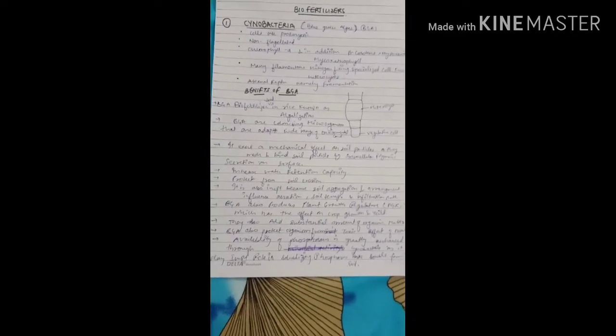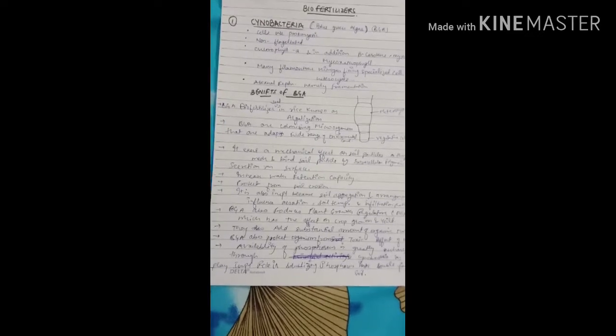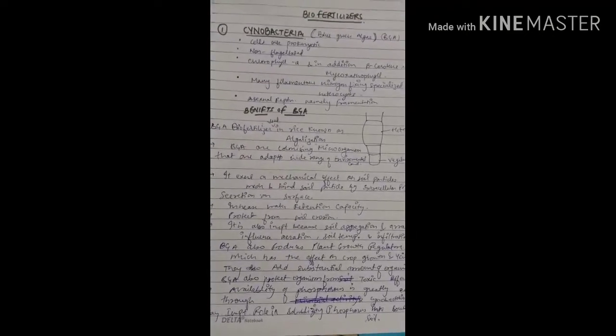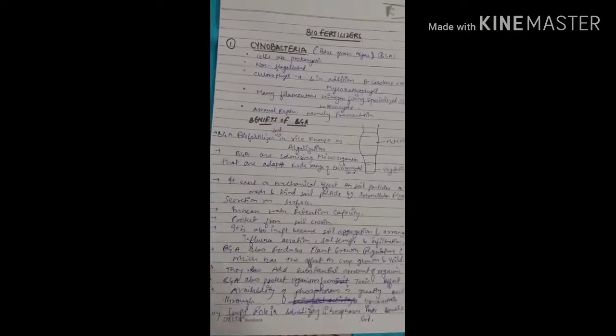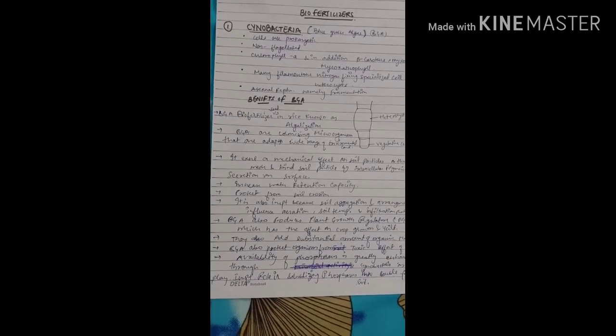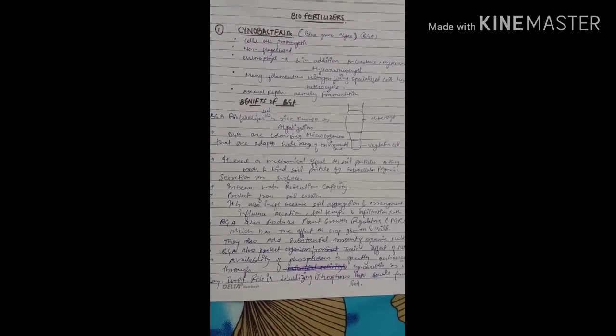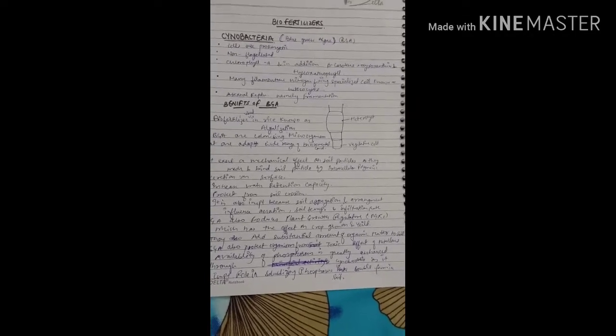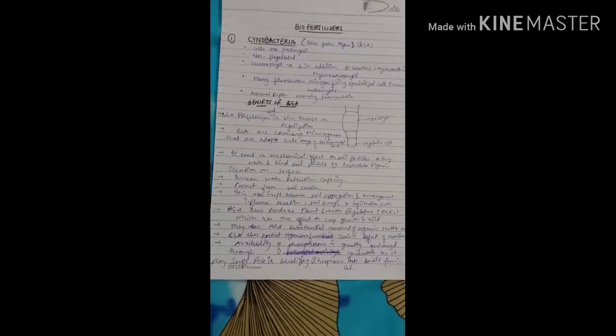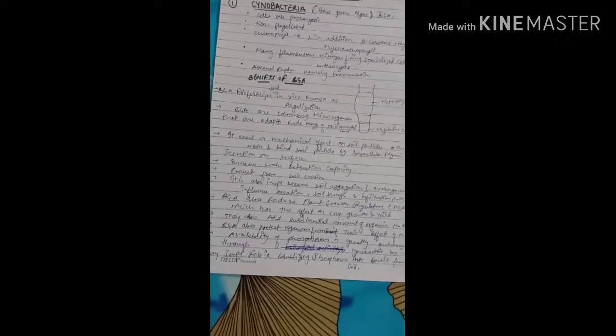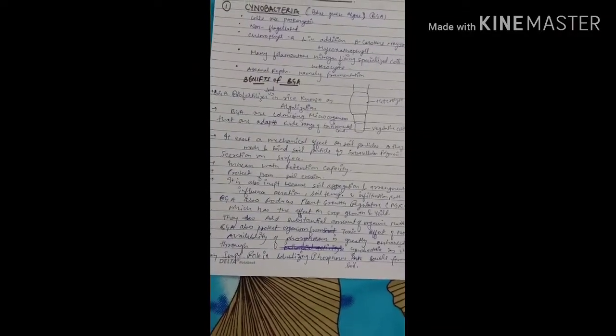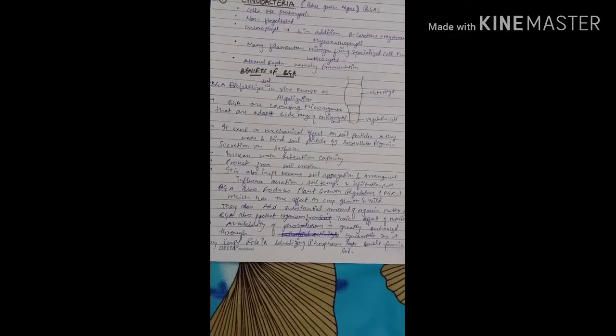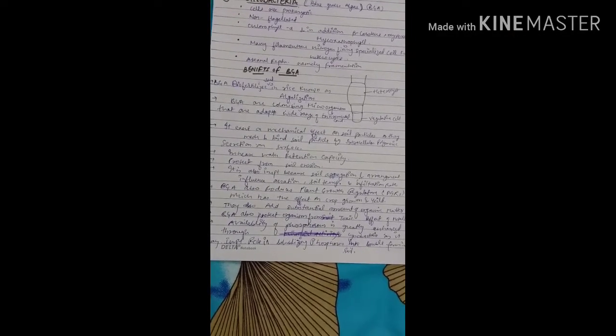Benefits of BGA as a fertilizer: it is used in rice, known as algalization. BGA are colonizing microorganisms that adapt to wide range of environmental conditions. You can get a pen and paper and write down these details or points that you can write in exams. First thing is algalization process. Second thing, it can be used for wide range of environmental conditions.